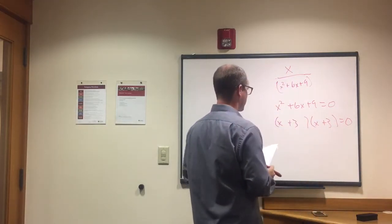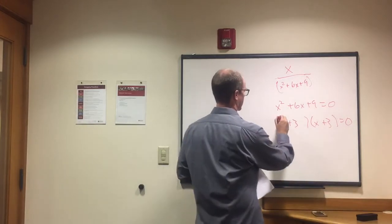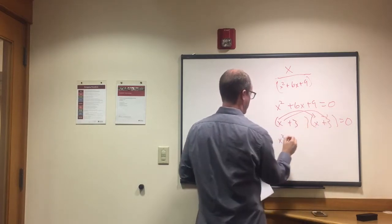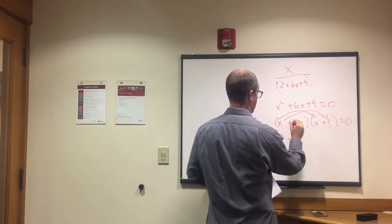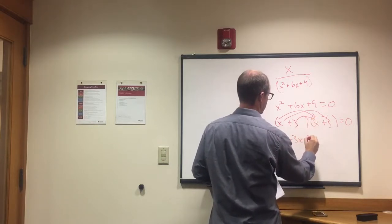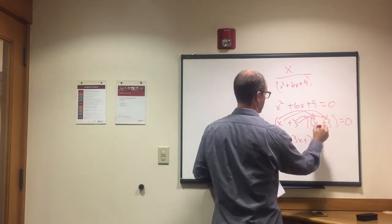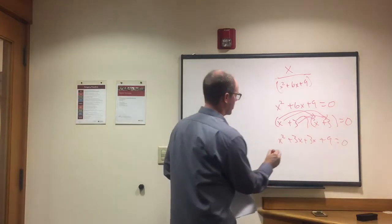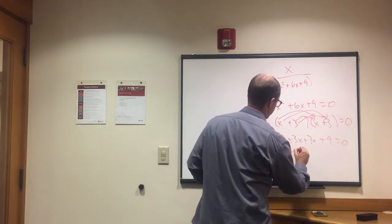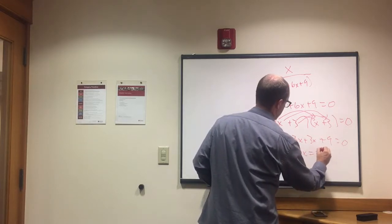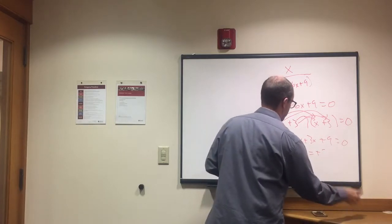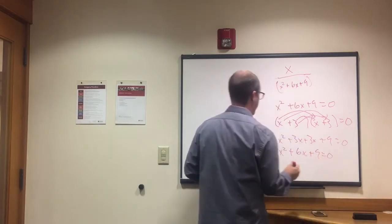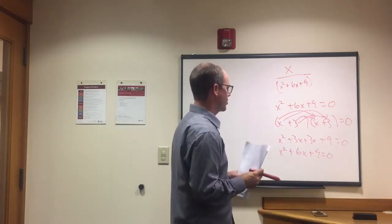To make sure we set that up right, we have x times x is x squared, x times 3 is 3x, 3 times x also 3x, 3 times 3 is 9. So there's our formula, and then we have x squared plus 3x plus 3x is 6x, plus 9 equals 0. So we set it up right.